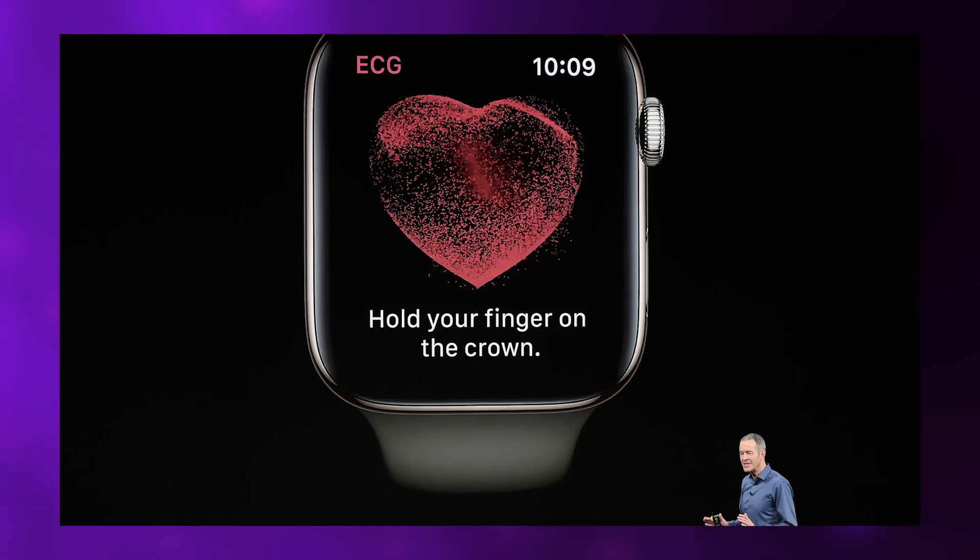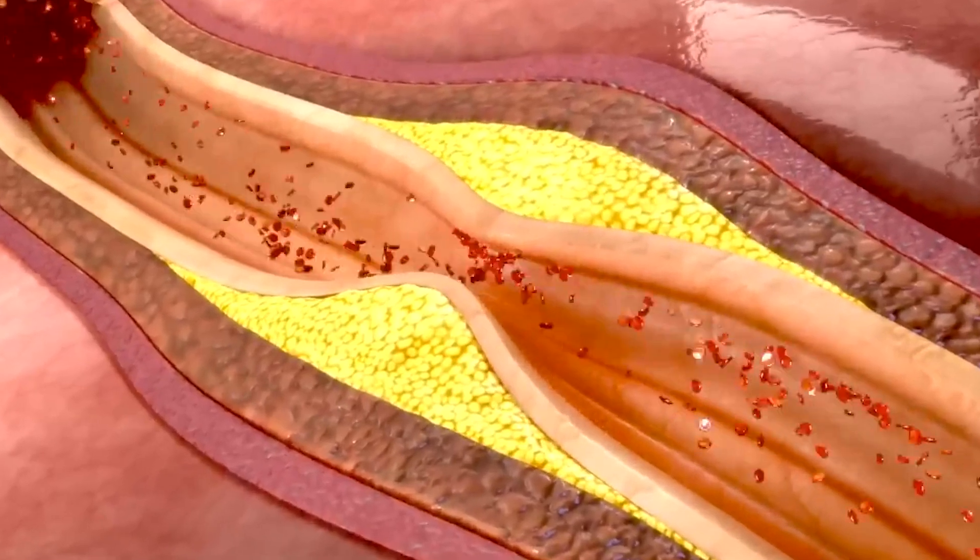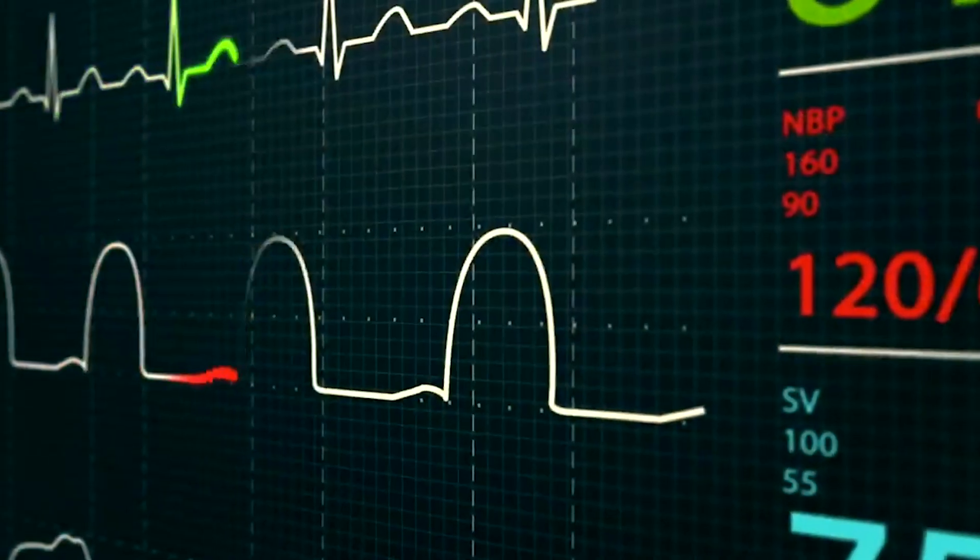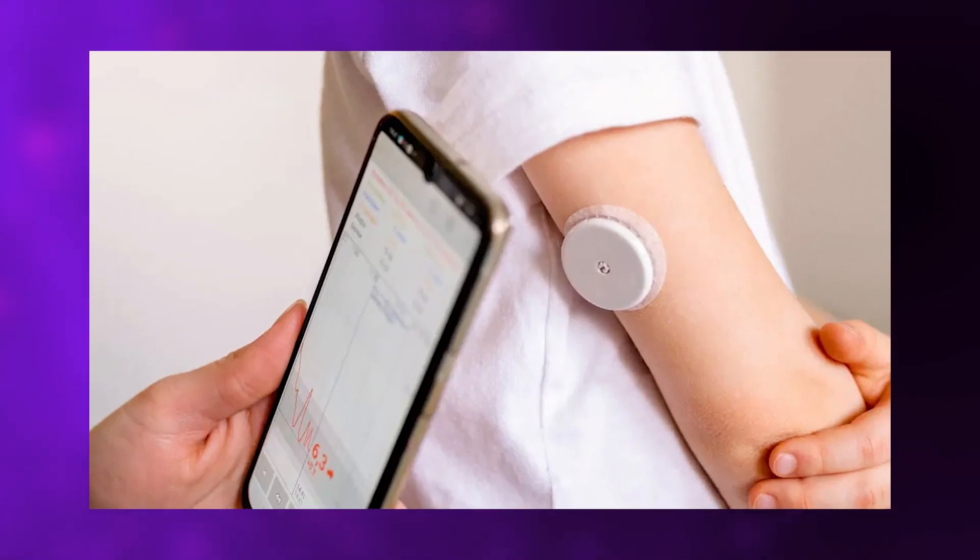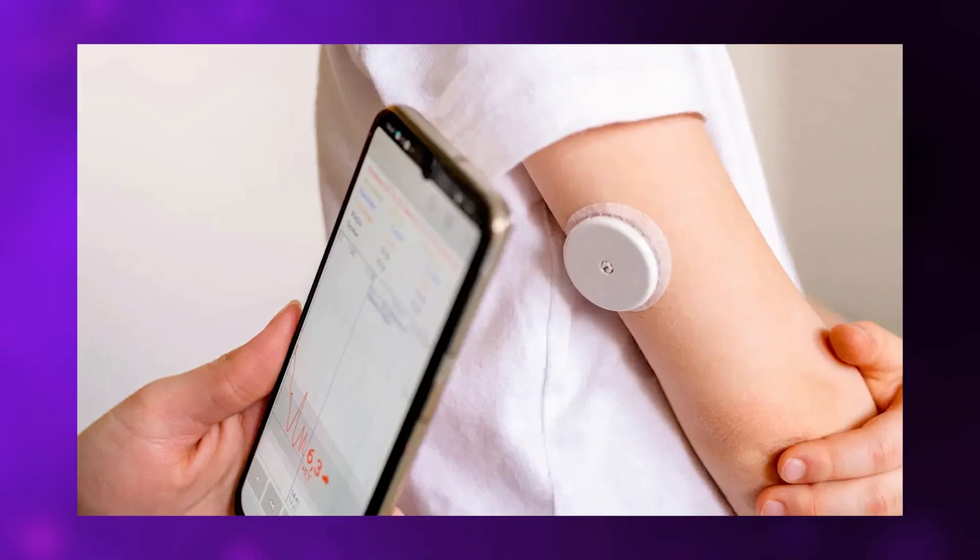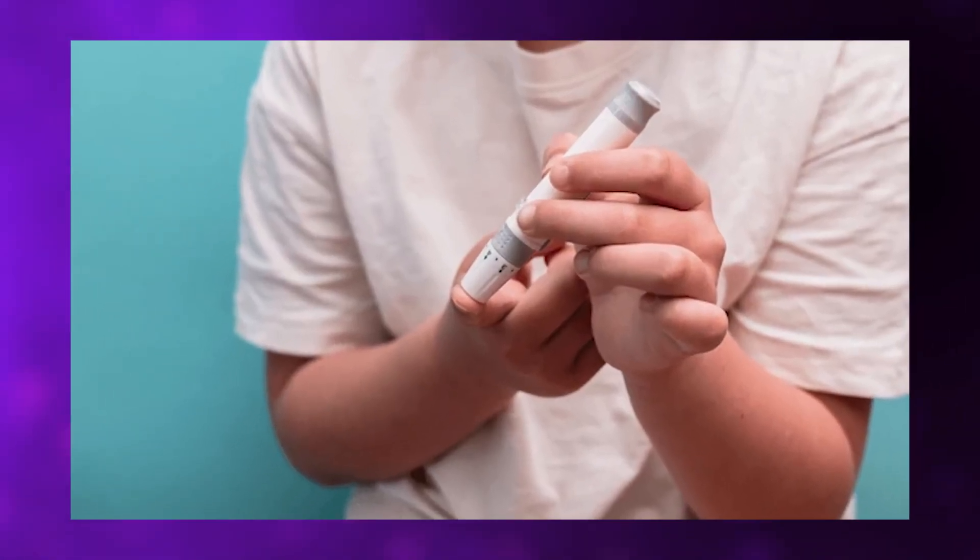The Apple Watch can perform an electrocardiogram right on your wrist, catching atrial fibrillation, a major stroke risk, before it causes catastrophic damage. Continuous glucose monitors have revolutionized diabetes management by 2023, eliminating painful finger pricks and giving patients real-time data to manage their condition.